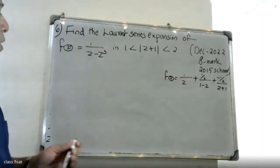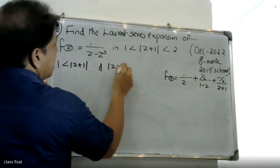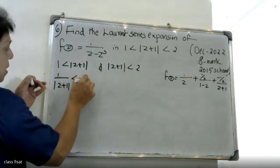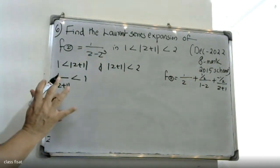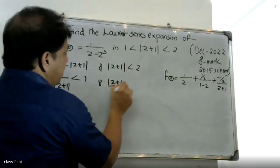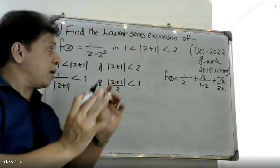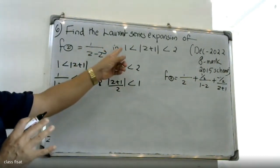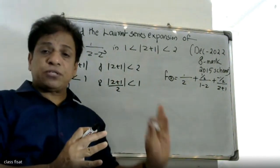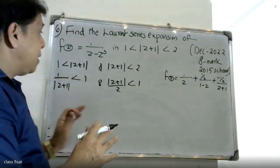For the region 1 less than mod(z) plus 1 less than 2: 1 less than mod(z) plus 1, so 1 divided by mod(z) plus 1 less than 1, and mod(z) plus 1 less than 2, so dividing by 2 gives mod(z) plus 1 divided by 2 less than 1. The Laurent series expansion of 1 by mod(z) plus 1 and 1 by mod(z) plus 1. Then F(s).